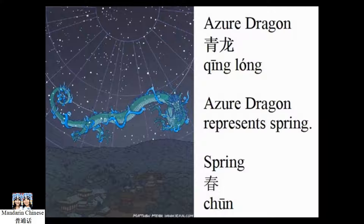The Azure Dragon is the constellation which marks spring. It is important to know when spring begins, as there are crops to be planted and rituals to be performed. Azure Dragon — 青龙. Spring — 春.